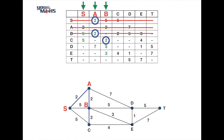We repeat the process: highlight the edge connecting B and C, cross out row C in the table, and examine the remaining entries in columns S, A, B, and C. The smallest number is a 3, which is the edge connecting vertex B to vertex E.